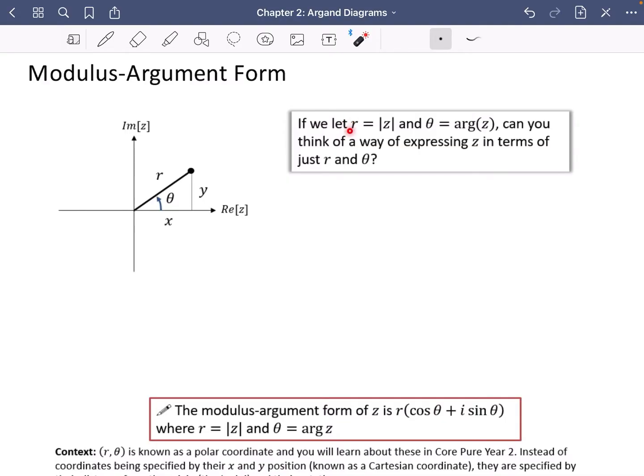So I've said here, if we let r equal the modulus of z, in other words r is the length of this line that we've got here, and theta equal the argument of z, which is this angle here, can you think of a way of expressing z in terms of just r and theta.